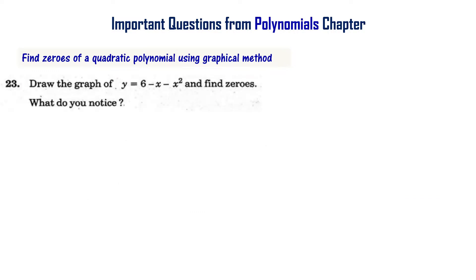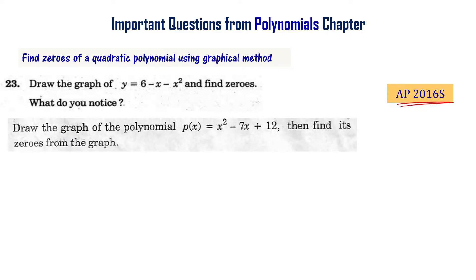Draw the graph of y = 6 - x - x² and find the zeros — this appeared in the AP supplementary exam 2016. Draw the graph of P(x) = x² - 7x + 12 and find its zeros from the graph — this is from the Telangana final exam 2019.